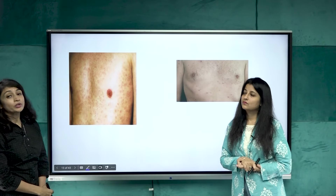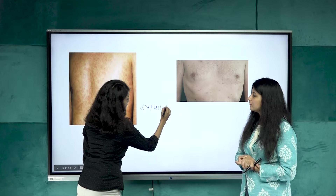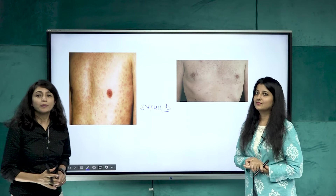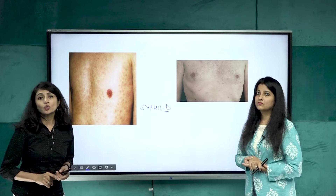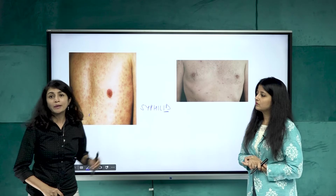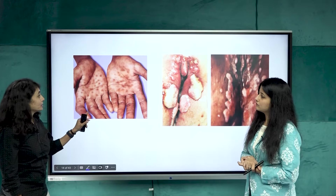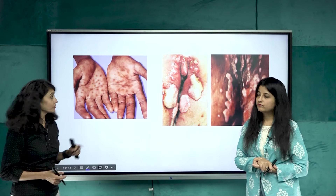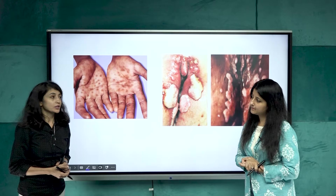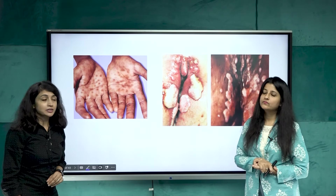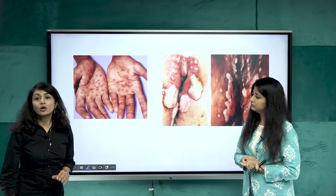Important skin features of secondary syphilis include syphilids — id reactions occurring as Treponema pallidum traverses the blood. These lesions are painless, non-itchy, asymptomatic, and rose-colored, presenting as macules, papules, or lichenoid lesions, but never as vesicles or bullae. Key features are hyperpigmented macules on palms and soles, known as the Buschke-Ollendorff sign. In intertriginous areas, macerated papules form moist ulcer-looking lesions called condyloma lata.